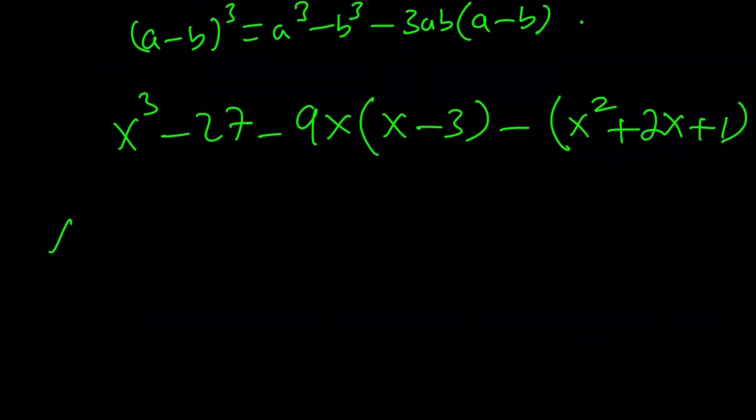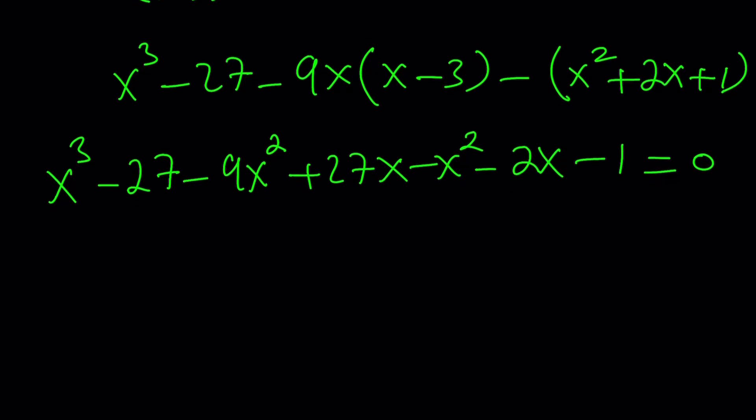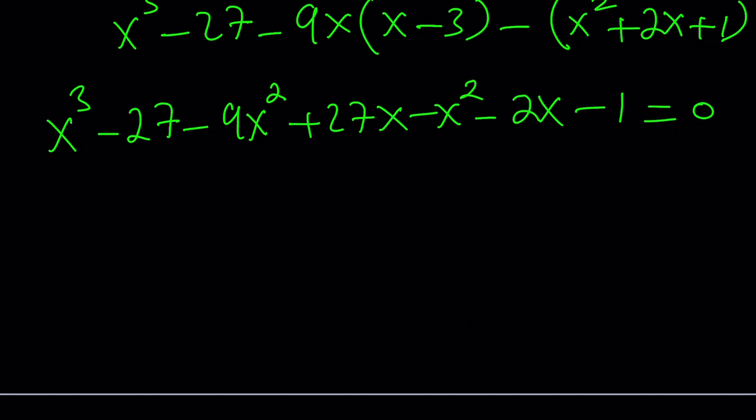Let's go ahead and distribute and simplify this. x cubed minus 27 minus 9x squared plus 27x minus x squared minus 2x minus 1. If you simplify this and set it equal to 0, we're going to get x cubed minus 10x squared plus 25x minus 28 equals 0.